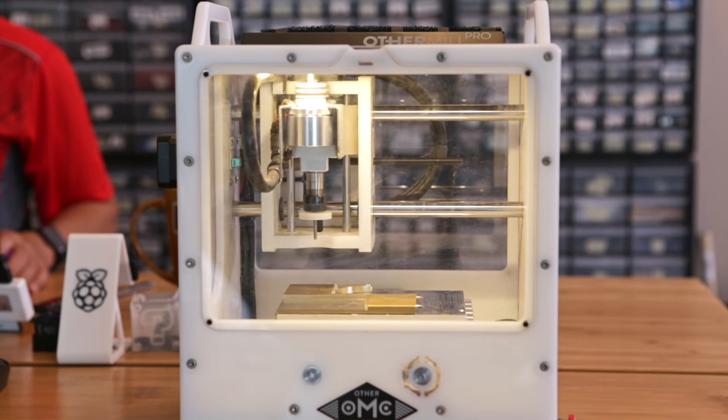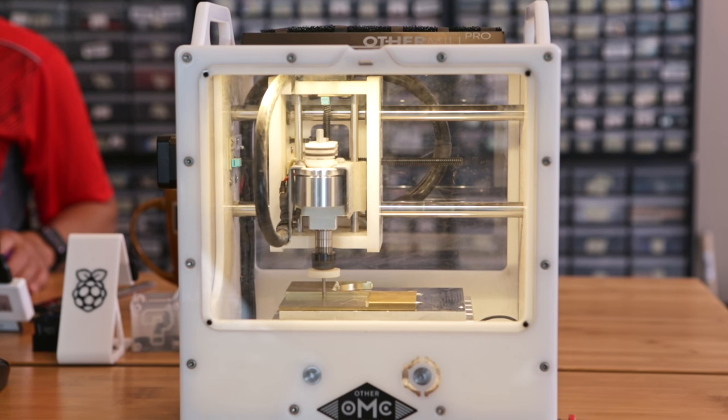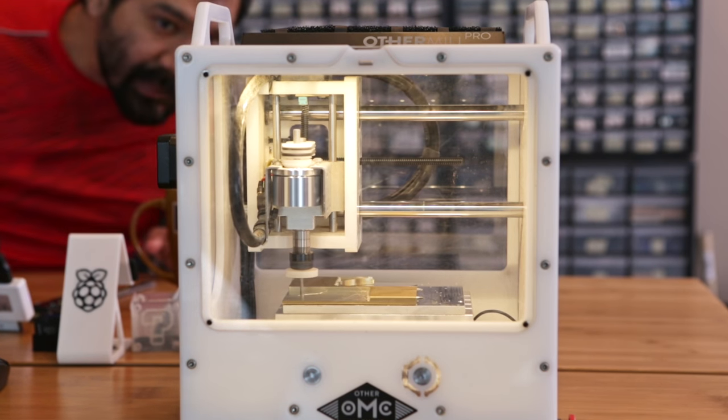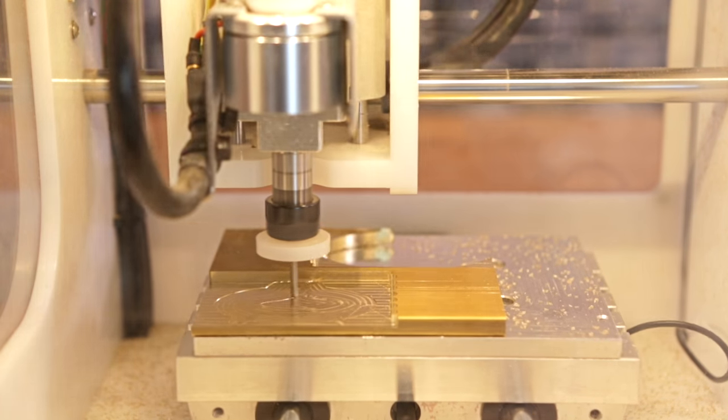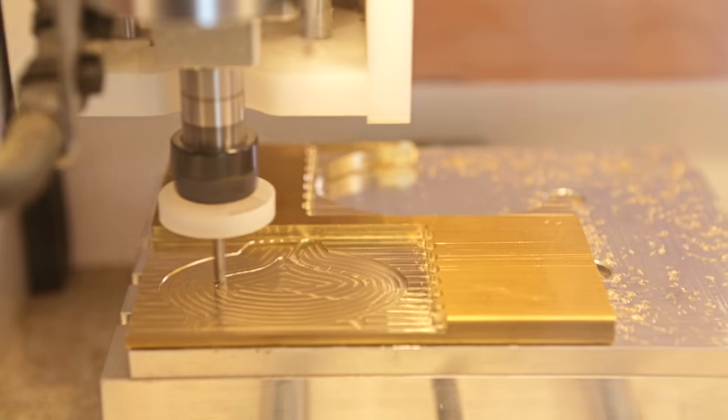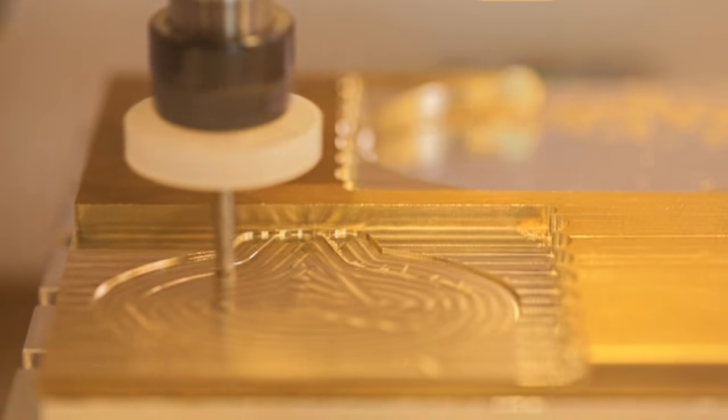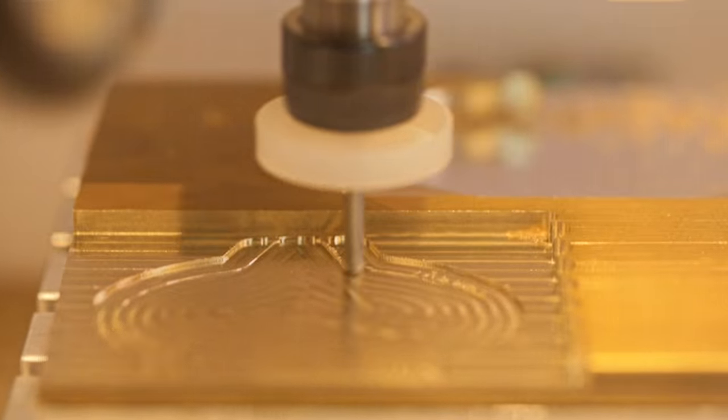The next procedure I'm running is called a pocket. This will create the cavity necessary for our base part. You'll notice the toolpath generates these concentric patterns and this can be removed with a bit of polishing after it's done.